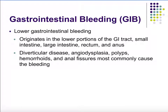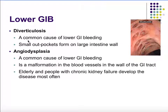Lower GI bleeding originates in the lower small intestine, large intestine, rectum, or anus, and comes out in the feces. Common causes include diverticular disease, angiodysplasia, polyps, hemorrhoids, and anal fissures. Diverticulosis involves small outpockets forming on the large intestine wall where things can get stuck, causing damage and bleeding. Angiodysplasia is a malformation of blood vessels in the GI tract wall, increasing likelihood of bleeding, and is more common in elderly patients and those with chronic kidney failure.